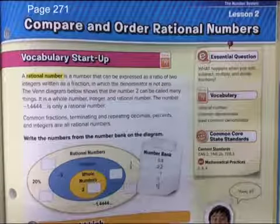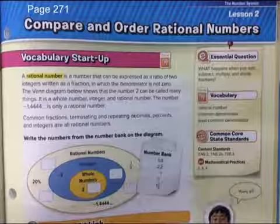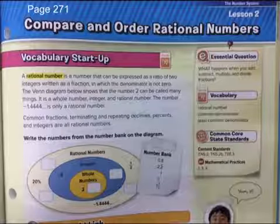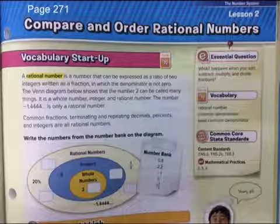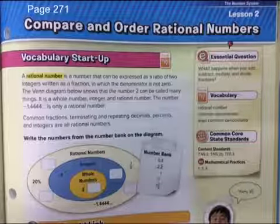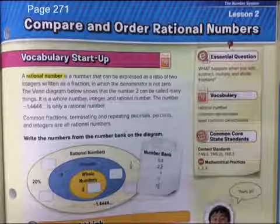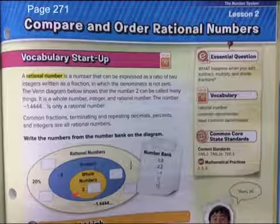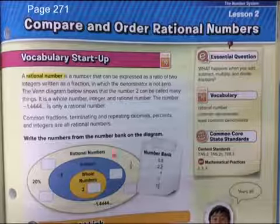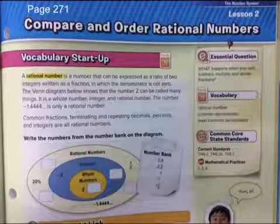Now, we discussed in the last lesson what a rational number was. A rational number includes whole numbers, integers, natural numbers, and obviously rational numbers.